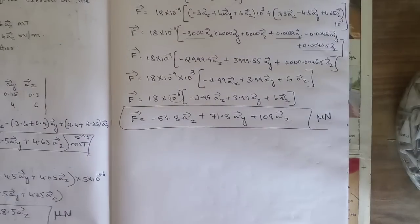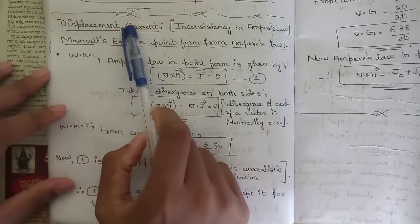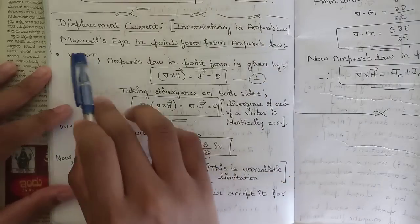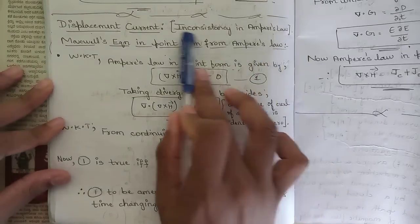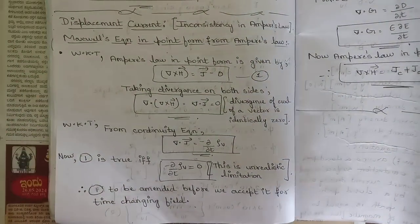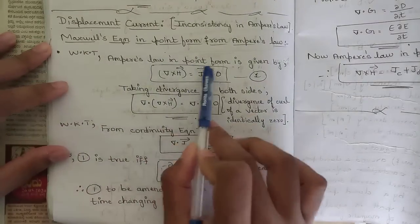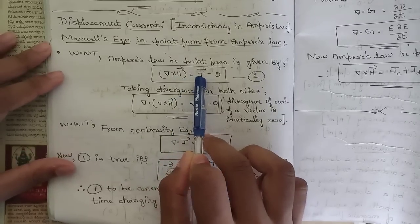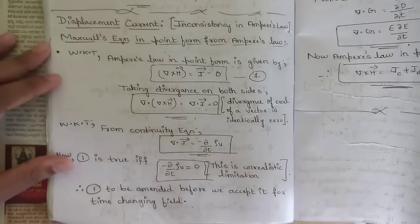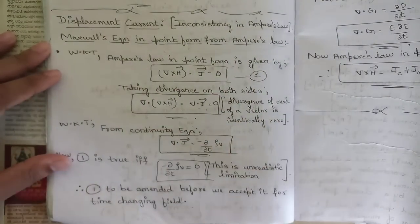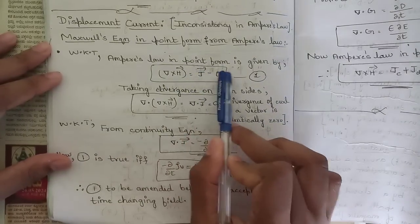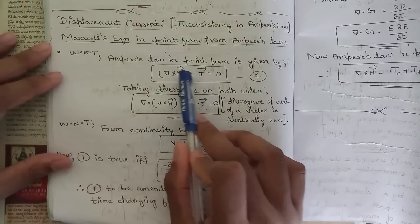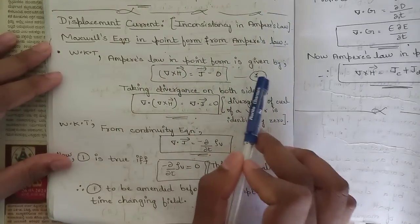Next concept: displacement current and inconsistency in Ampere's law — a derivation of Maxwell's equation in point form derived from Ampere's law. We know Ampere's law in point form is ∇×H = J, where H is magnetic field intensity and J is current density. We write ∇×H = J - 0 (equation 1), since subtracting zero doesn't change the equation.